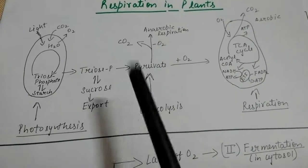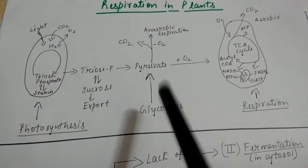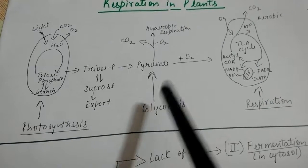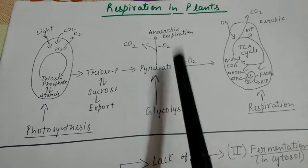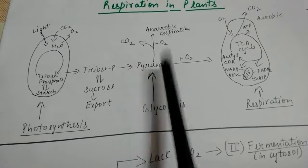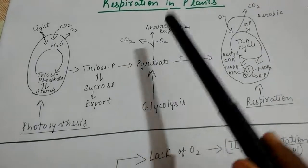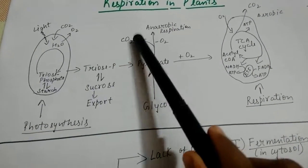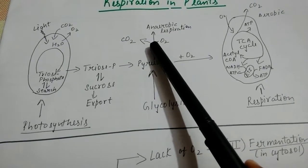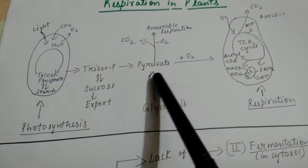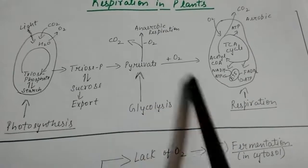Sucrose is converted into glucose and mainly enters into the process of glycolysis. Glycolysis is the process of the breakdown or partial oxidation of glucose into pyruvic acid. Here begins the actual process of respiration — whether it takes place in the presence of oxygen or in the absence of oxygen. If it occurs in the absence of oxygen, it is called anaerobic respiration, with liberation of CO2 and ethanol, which is called fermentation.